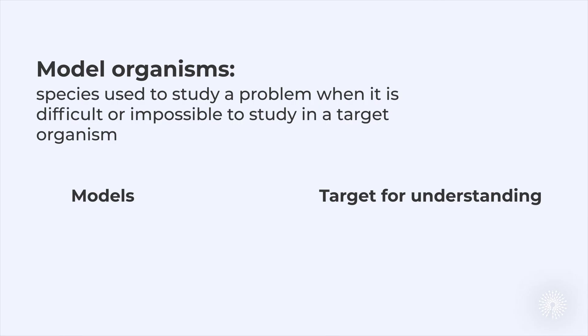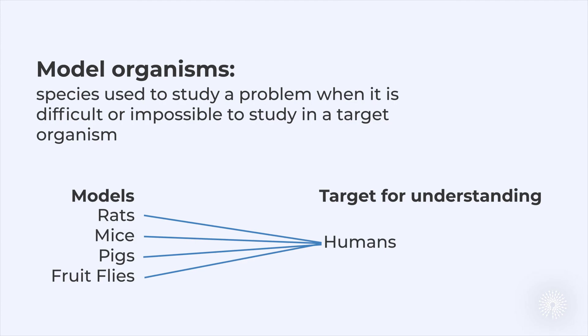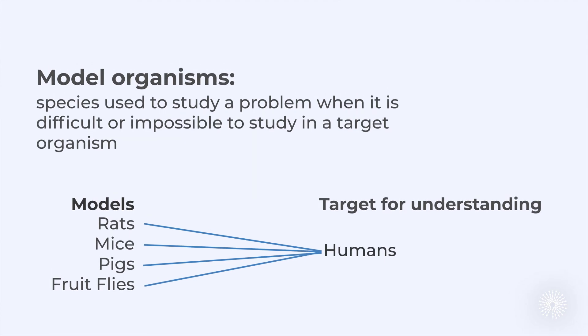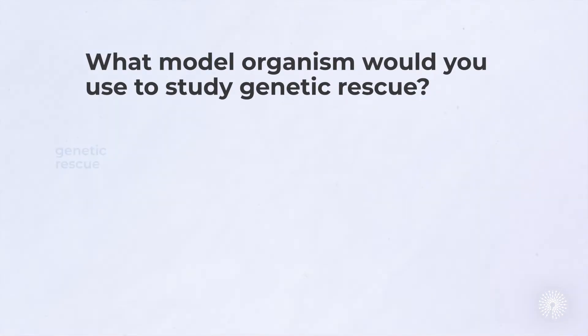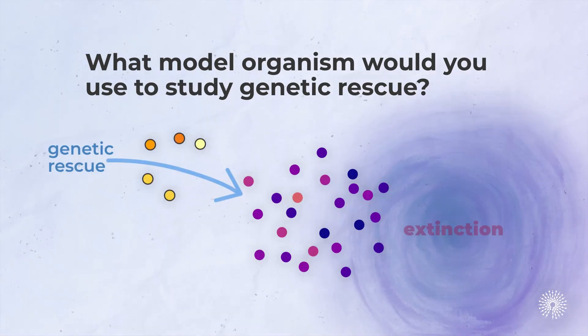For example, because we can't ethically experiment on humans, we often use rats, pigs, and even fruit flies to understand aspects of our biology that we have in common. So, what model organism would you use to study genetic rescue?